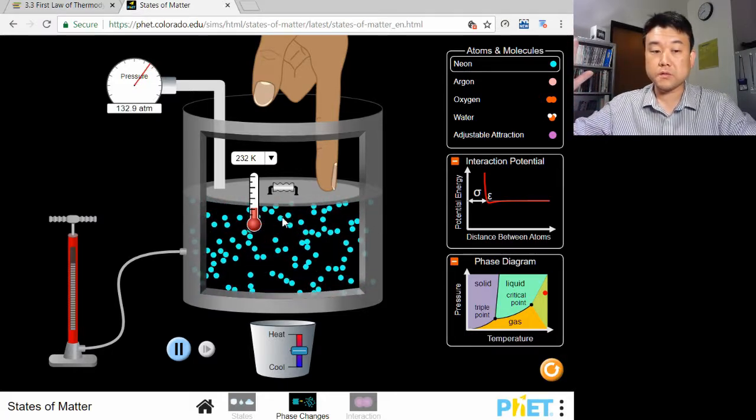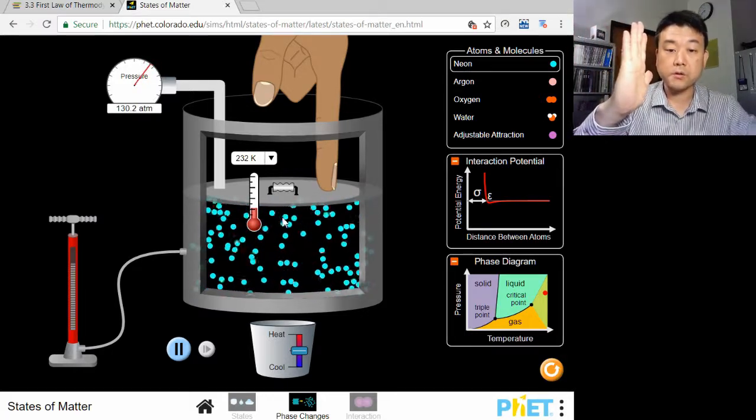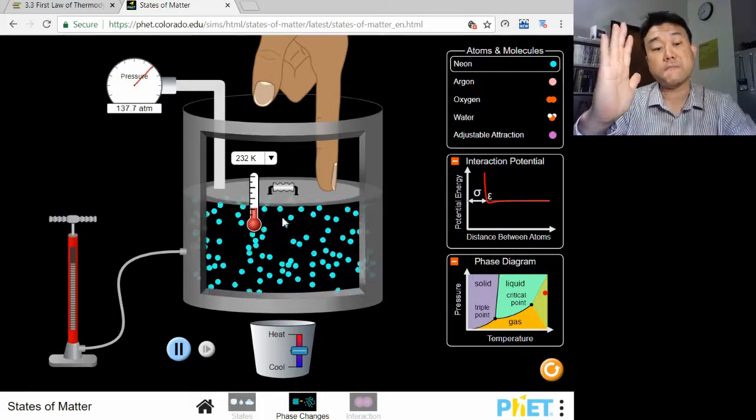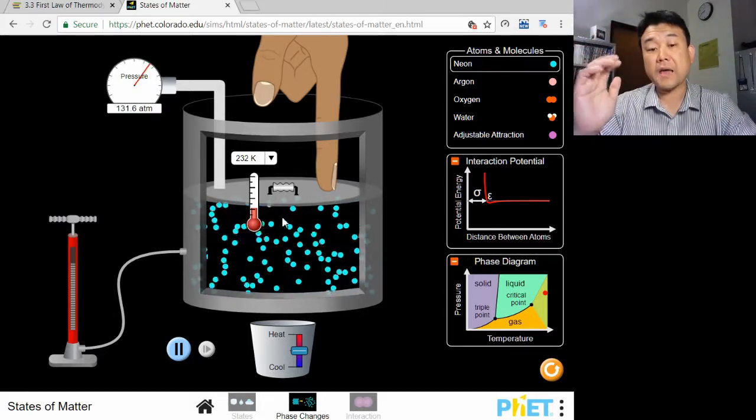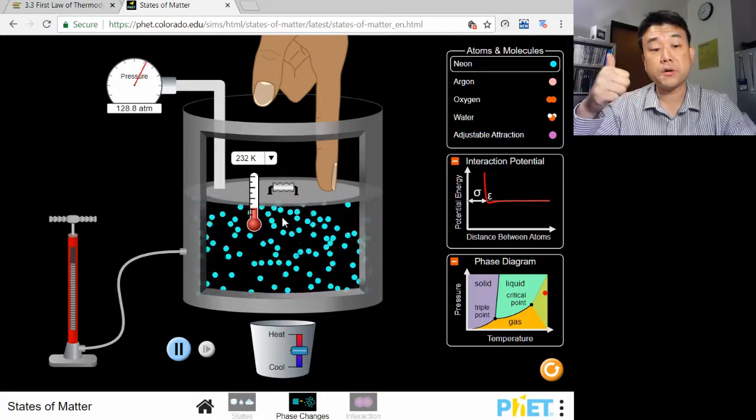The ball bounces off faster than it came in. So here, if the piston wall is moving toward the gas molecule, the gas molecule bounces off faster than it comes in, which means higher kinetic energy and temperature for the gas.